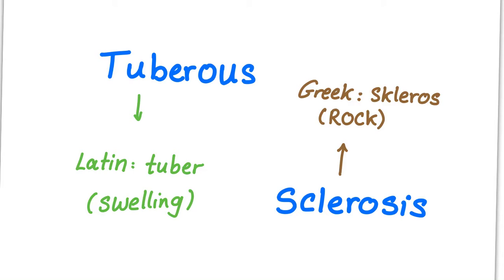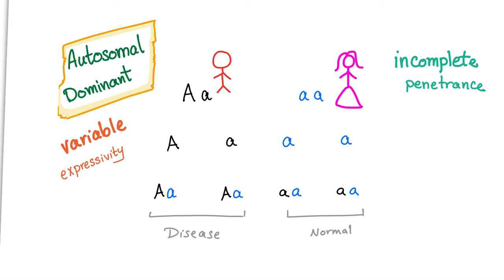Tuberous sclerosis is autosomal dominant. So if daddy has tuberous sclerosis and mommy does not, since it's autosomal dominant, 50% of the offspring will have the disease. This is called autosomal dominant inheritance.